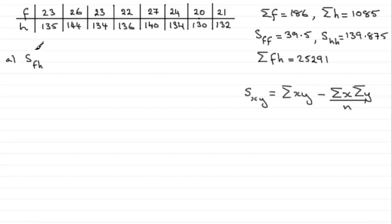But for this one, if we've got to work out S of fh, then f is replacing the x and h is replacing the y. So this is going to be sigma of fh minus sigma f multiplied by sigma h all divided by n.